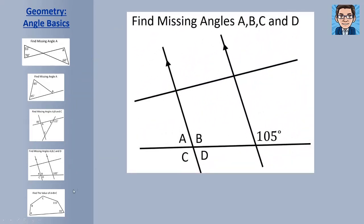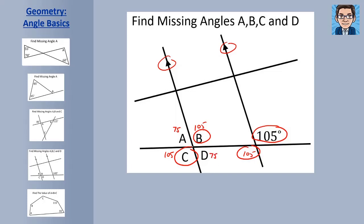In the next problem, notice that we have parallel lines — the symbols indicate those two lines are parallel with a line crossing them. When we have a line crossing two parallel lines, we get four big angles and four small angles. All the big angles are going to be the same, so all of those are 105. A and B form a straight angle, so 180 minus 105 is 75. All the small angles are 75. So A is 75, B is 105, D is 75, and C is 105.